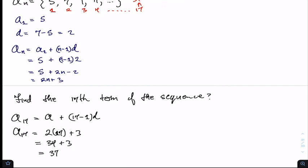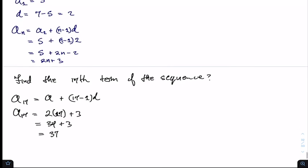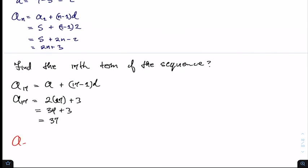And also if n is large we might not be able to do it under examination condition. For example, if I wanted to find a sub 500, which is the 500th term in the sequence, it would take us a very long time before we got there.